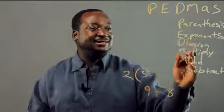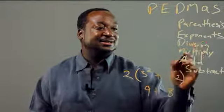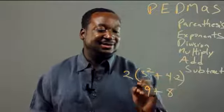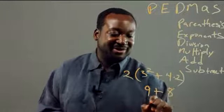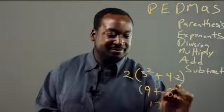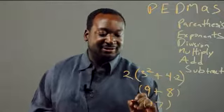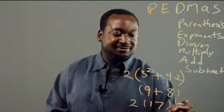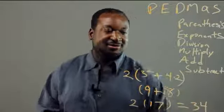And then next, we go to the next step: we add and subtract. So 9 plus 8 gives us 17. And when we bring that 2 here, it's going to be 2 times 17, and that equals 34.